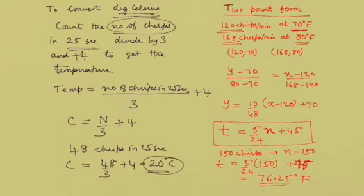When you take an example that N is equal to 48 chirps in 25 seconds, this can easily be counted. We get C is equal to 48 upon 3 plus 4, and you get 20 degrees Celsius.